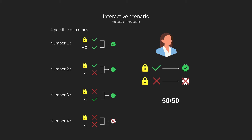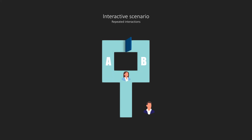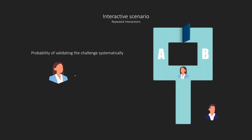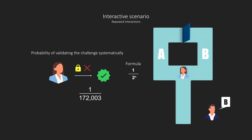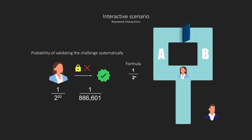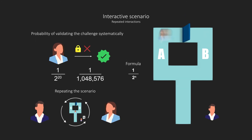We can see that if Peggy knows the secret word, then she will systematically validate the challenge. If she doesn't know it, there is a 50-50 chance that she won't be able to complete the challenge. This is not good enough — at this point, she could just be lucky and trick Victor. To solve this issue, Peggy and Victor will repeat the experiment a certain number of times. That way, the probability that Peggy systematically validates the challenge if she does not know the secret word will decrease with each trial according to the formula 1 to the power of 2 times n. The probability of completing the challenge 20 times in a row is only 1 to the power of 2 times 20, that is less than 1 in a million. The repetition of the protocol between the two characters will make it more and more likely that Peggy knows the secret word, and a certain number of attempts will eventually convince Victor.